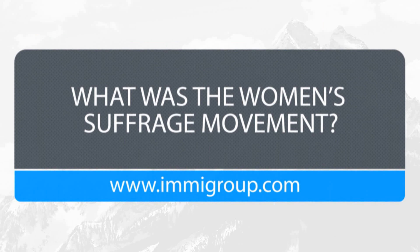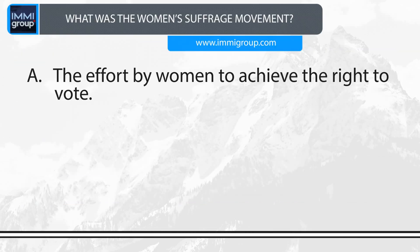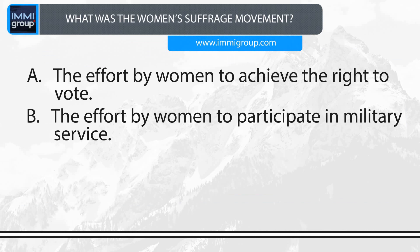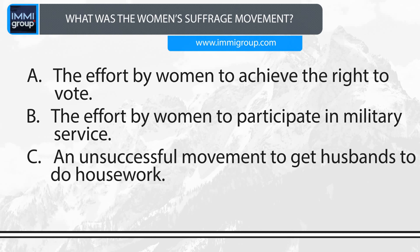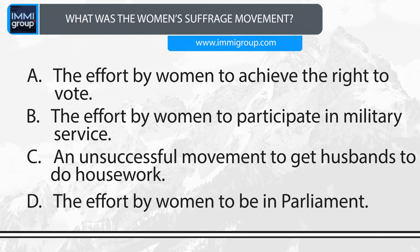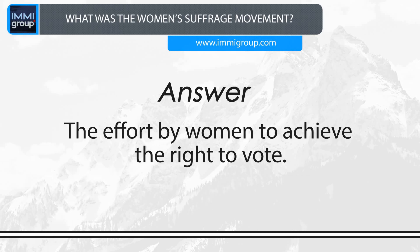What was the women's suffrage movement? A. The effort by women to achieve the right to vote. B. The effort by women to participate in military service. C. An unsuccessful movement to get husbands to do housework. D. The effort by women to be in Parliament. Answer: The effort by women to achieve the right to vote.